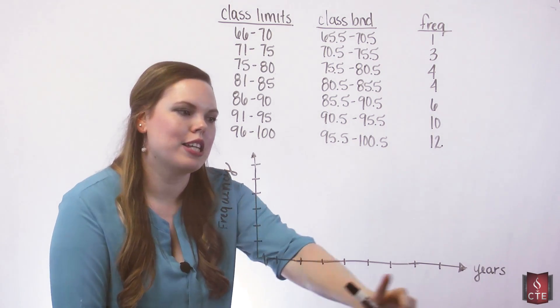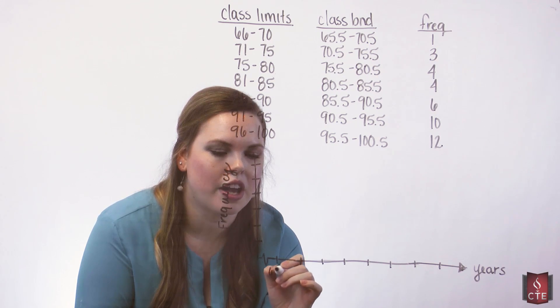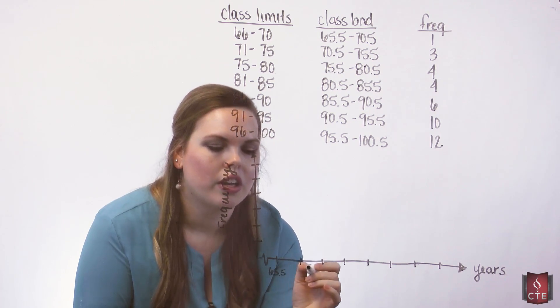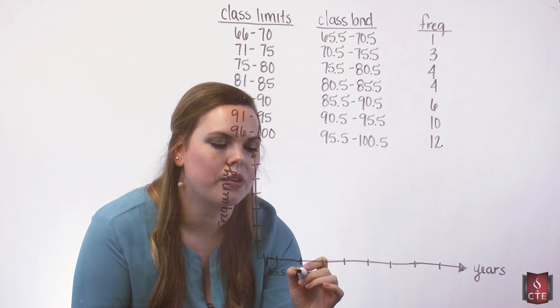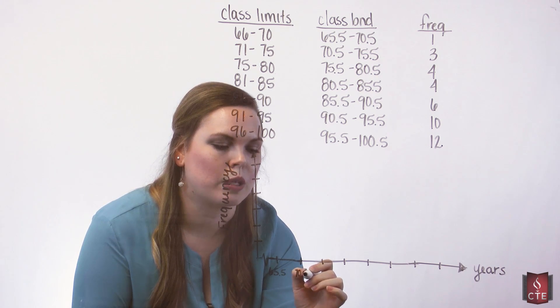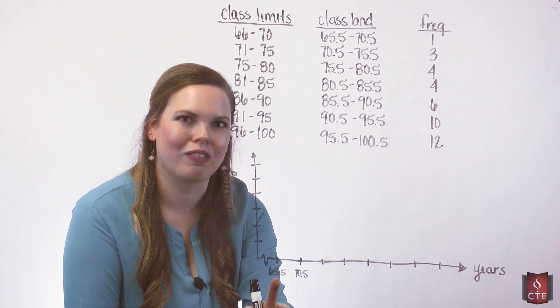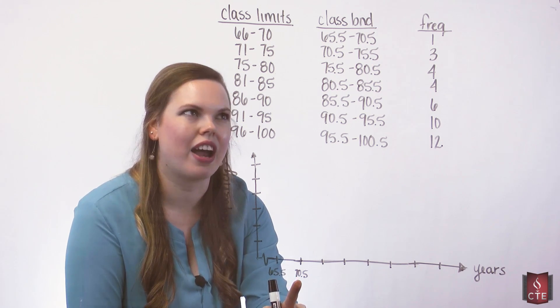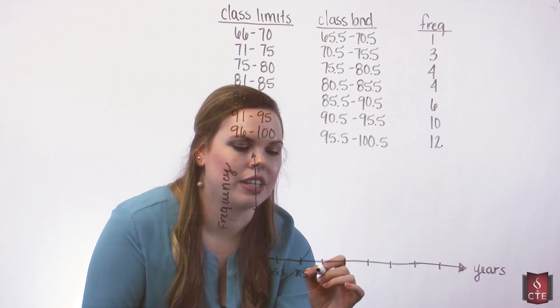So I'll label my class boundaries across here. A histogram, once again, the bars touch, so your class boundaries are what you're using so that you don't have any space between bars. So my first bar is going to begin at 65.5, it's going to end at 70.5, and then that's where my next bar will begin. So get this labeled.